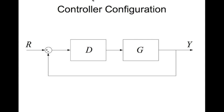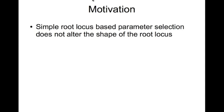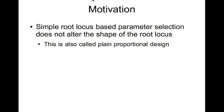This is the controller configuration illustrated before — nothing changes. The motivation is that a simple root locus based parameter selection does not alter the shape of the root locus, so it doesn't bend the root locus. This is also called the plain proportional controller design.